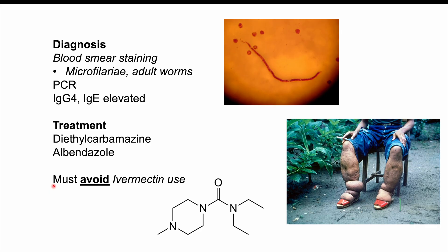If patients have a very high level of microfilariae, we want to give albendazole first. Diethylcarbamazine can also be used for preventative purposes to prevent loa loa infection in the first place. Critically, we must avoid use of ivermectin when a patient has a loa loa infection. The reason is that river blindness — which is treated with ivermectin — can occur in similar areas to loa loa, and if a patient is co-infected and we give ivermectin, this can cause severe, life-threatening reactions.